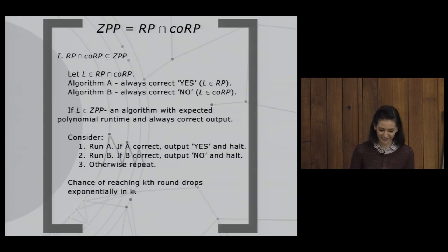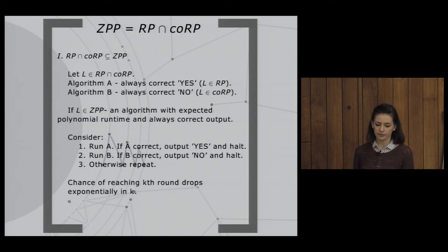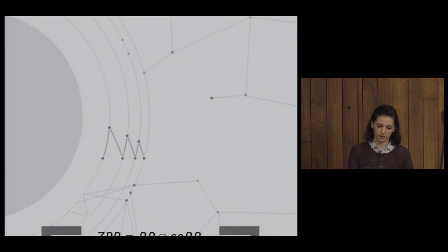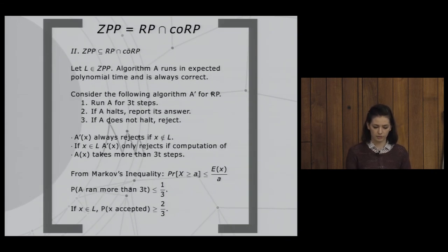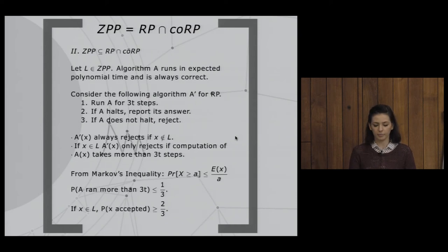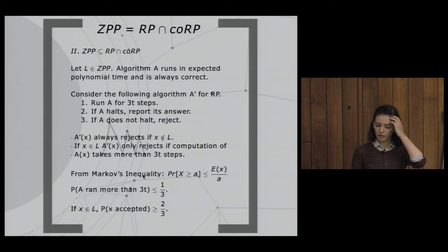We don't need to limit the number of steps since the algorithm converges, though an alternative is to output 'don't know' after T steps. For the converse, if we have a ZPP algorithm we can build one in RP ∩ co-RP by limiting the number of steps. By Markov's inequality, if we run for more than 3T steps, the probability of not outputting one of the desired answers is less than 1/3.